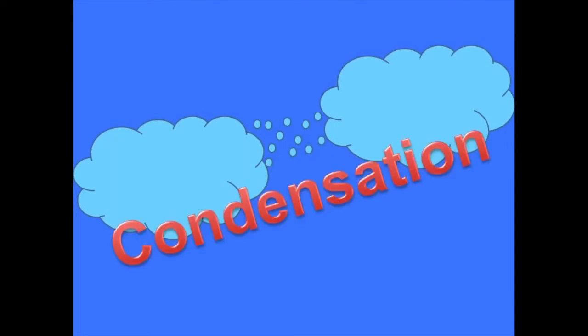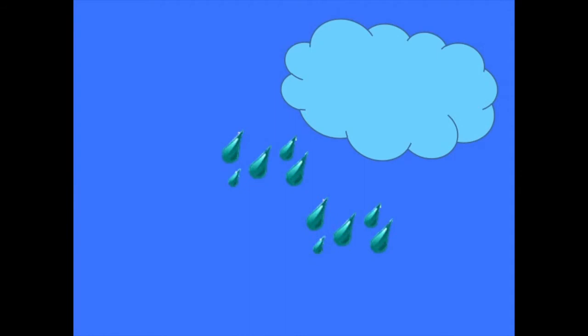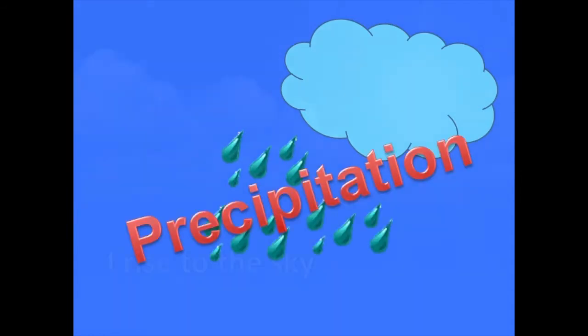And when this water vapour in the sky reforms into liquid water droplets, that's condensation. And when this water falls back down to the earth as rain, snow, hail, sleet, that's precipitation.